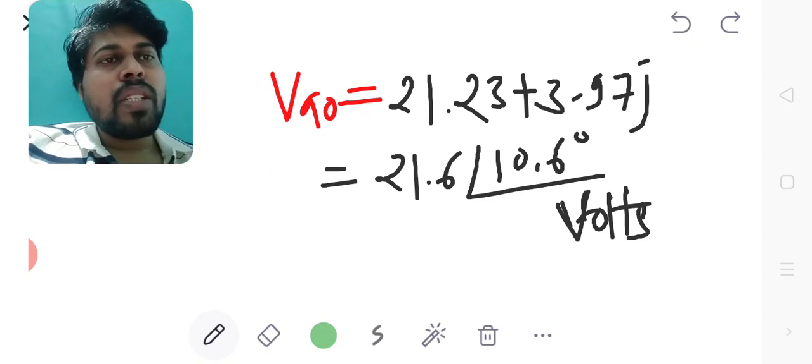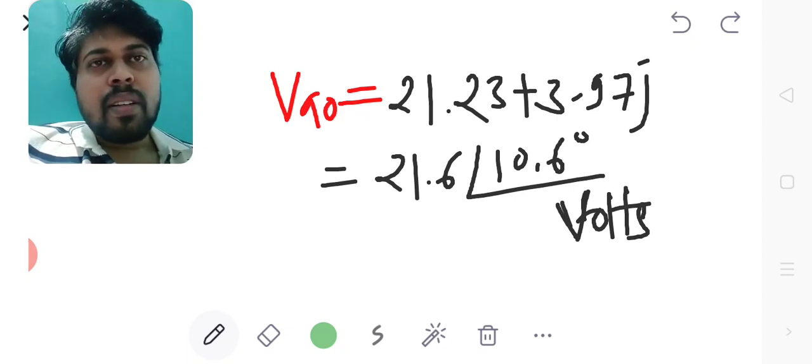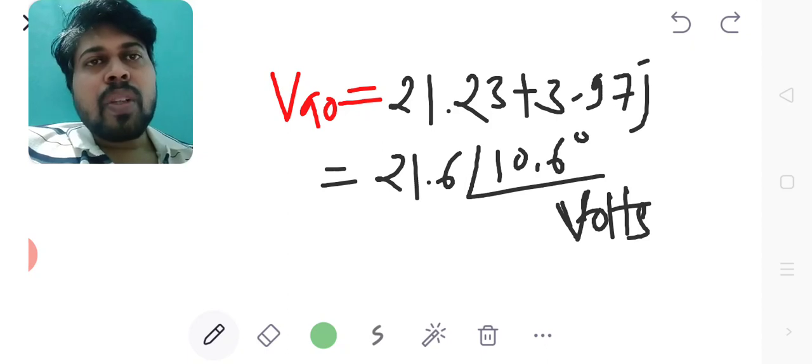21.6 at angle 10.6° volts in polar form. So this is the solution for this numerical when the phase voltages are given. The symmetrical components have been calculated here. Thank you.